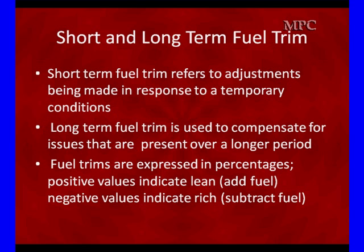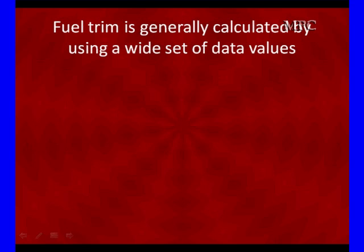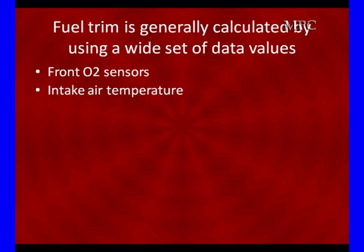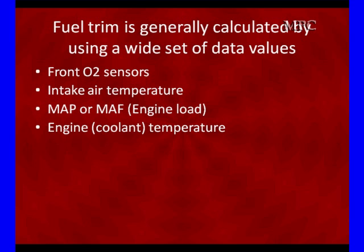Fuel trims are expressed in percentages. Positive values are lean — we're going to add fuel. Positive values indicate a lean condition; we need to add fuel. Negative values indicate a rich condition; we need to subtract fuel. It's calculated using a wide range of data values. The front O2 sensors are the predominant input, modified slightly by intake air, MAP, and engine load.